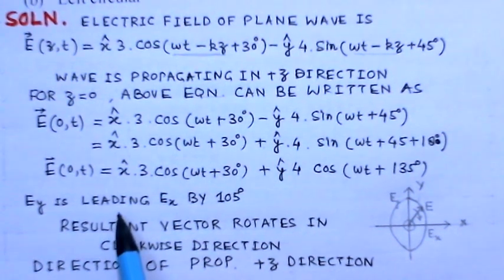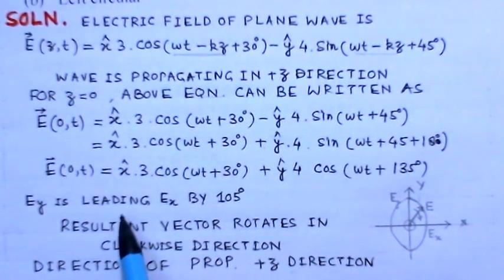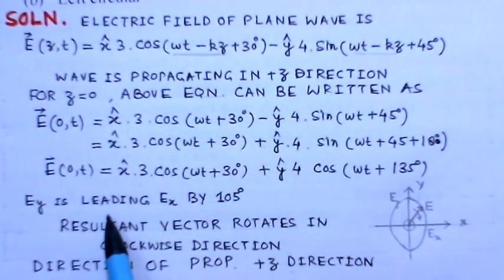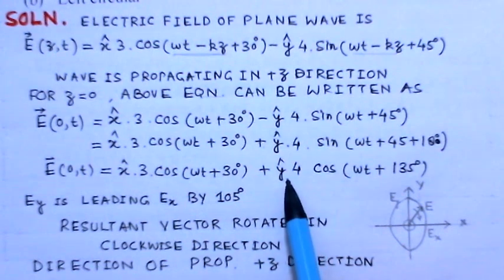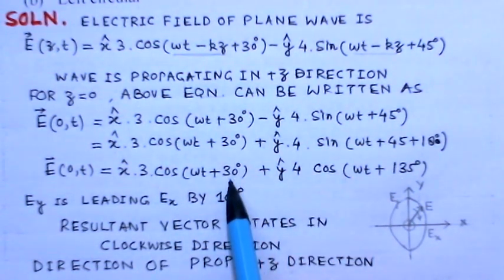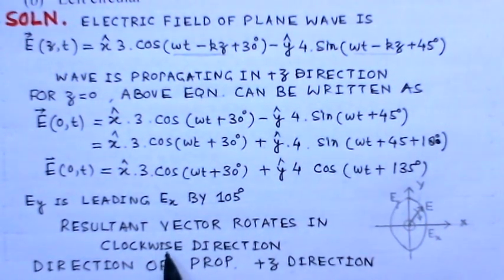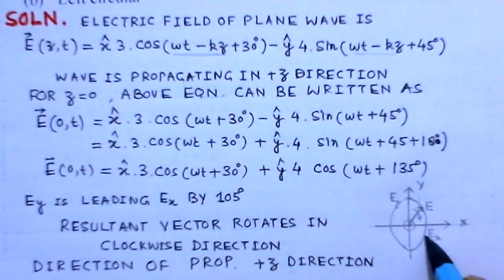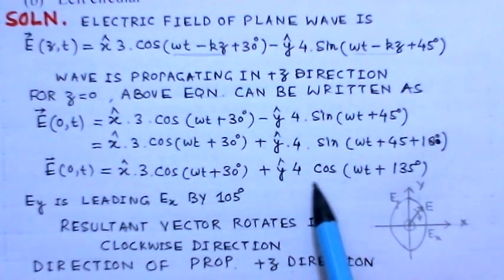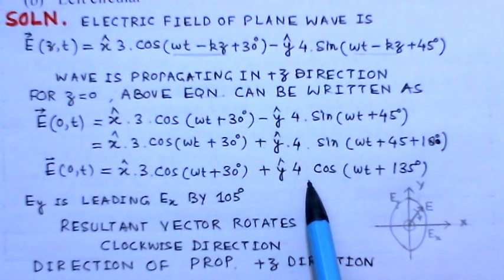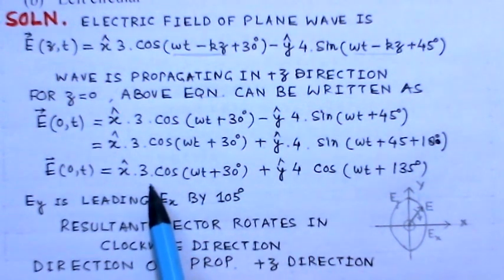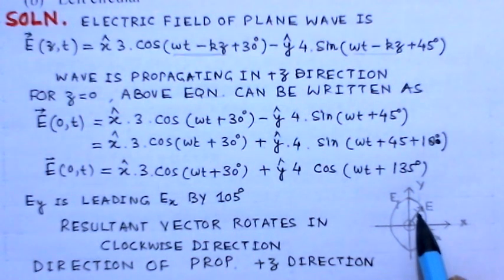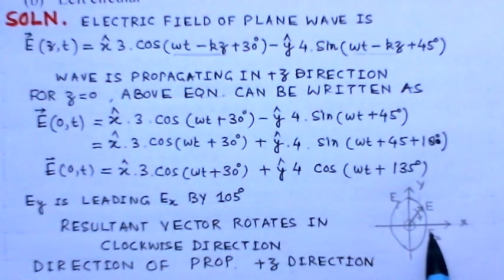Now we can find the polarization direction. The y component has a phase of 135° and the x component has 30°, so the EY component is leading EX by 105 degrees. According to the standard relation, when the Y field leads the X field, the resultant vector rotates in the clockwise direction.